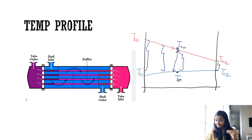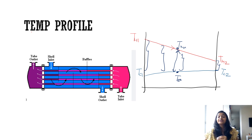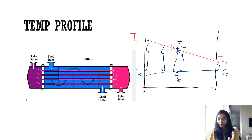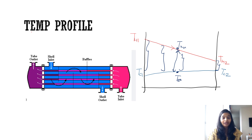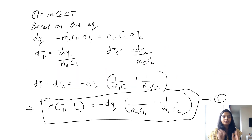Since the temperature keeps on changing at every point in the heat exchanger but the heat transfer rate is constant, this is best approximated by log mean temperature difference. Let's dive deeper and look at the equations.